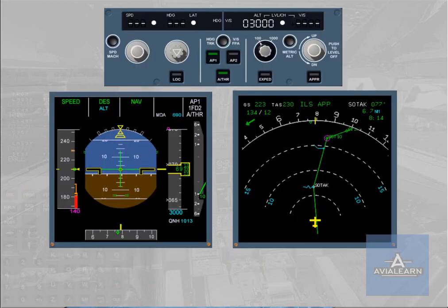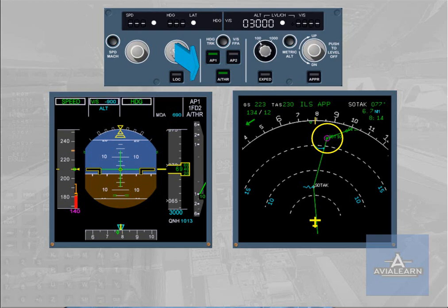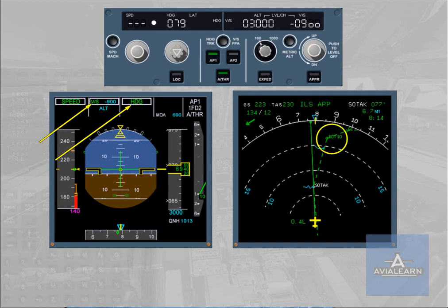The constraints defined in the vertical flight plan are related to the lateral flight plan. If the pilot chooses to fly away from the lateral flight plan in heading or track modes, the climb or descent modes are no longer available as reversion modes, and the constraints are disregarded.